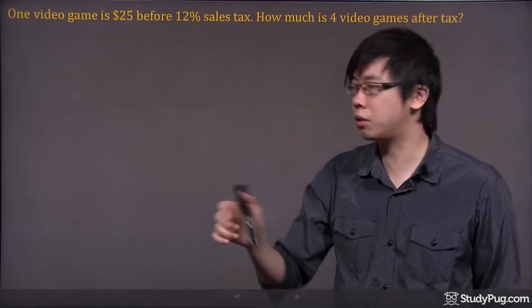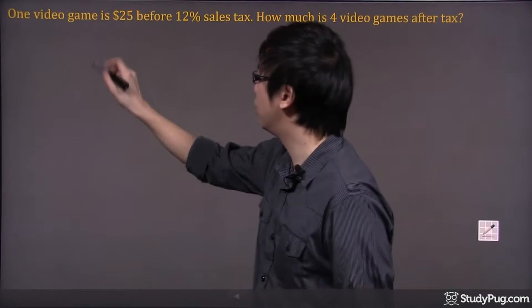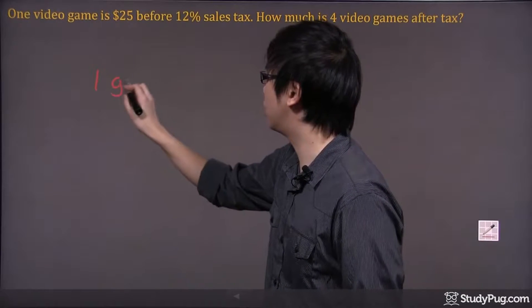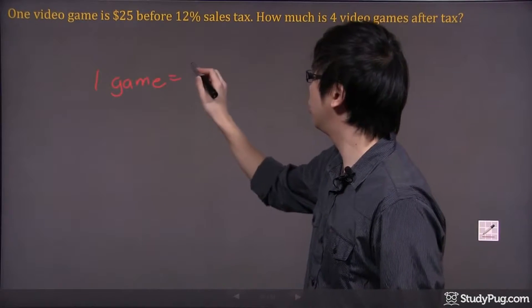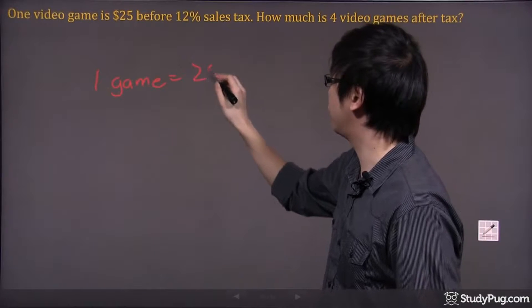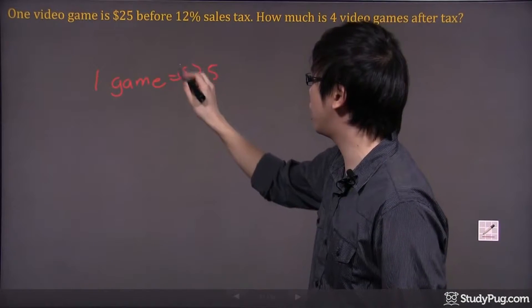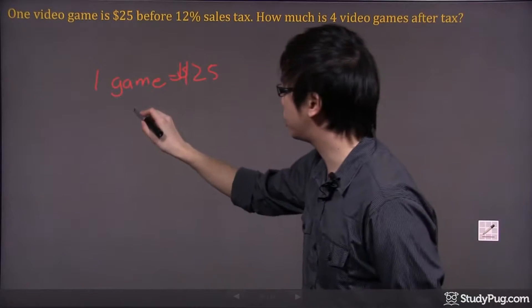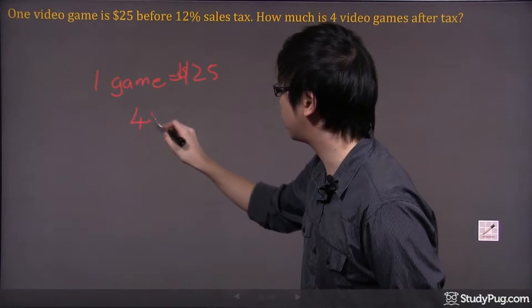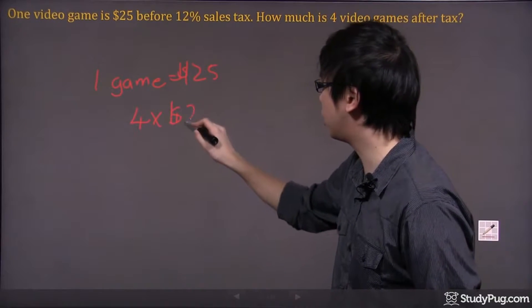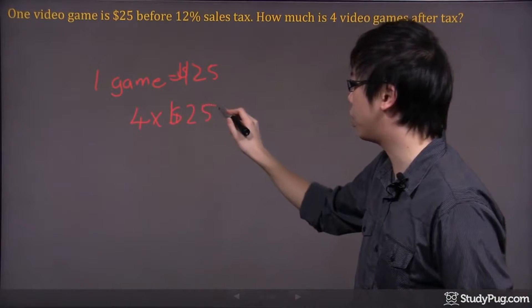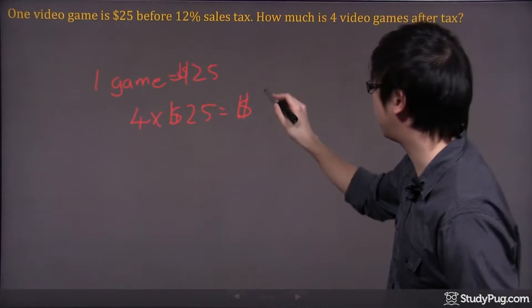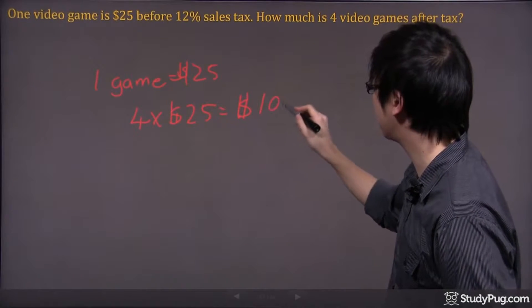So figure it out. Well, if one game is $25, for every game you're buying is $25. So it's quite obvious that if you're buying four games, why not just take the four games and times the $25 that you're buying? So that actually gives you $100 that you have to pay.